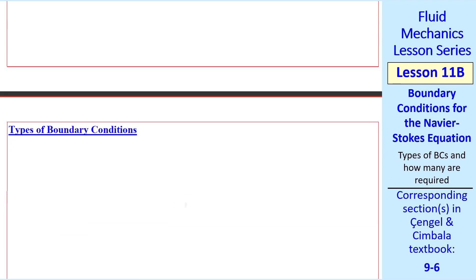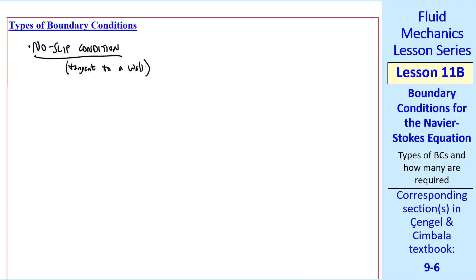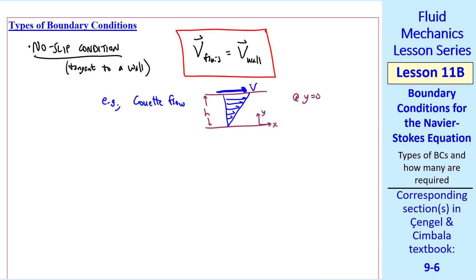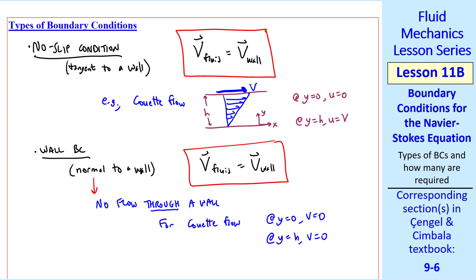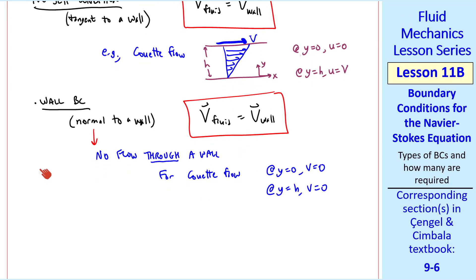Now let's look at the types of boundary conditions for fluid flows. We're already familiar with the no-slip condition, which applies tangent to a wall: the velocity of the fluid has to equal the velocity of the wall. Using Couette flow as a simple example, the no-slip condition tells us that at y equals 0, u equals 0 since the bottom wall is stationary, and at y equals h, u equals V since that wall is moving. There's another boundary condition normal to the wall with the same equation — the fluid velocity must equal the wall velocity — but thinking normal to the wall, there can be no flow through a solid wall. For Couette flow, at y equals 0, v equals 0, and at y equals h, v equals 0. Since this is a vector equation, it includes both u and v in a two-dimensional flow, so these two boundary conditions are really one boundary condition split into tangent and normal.